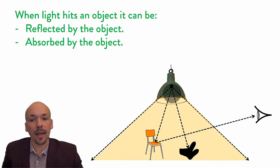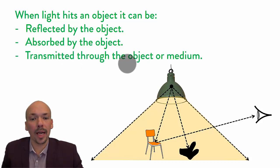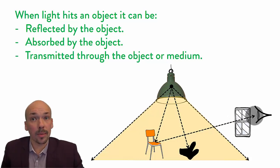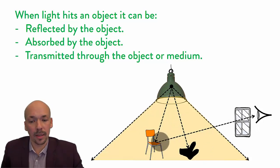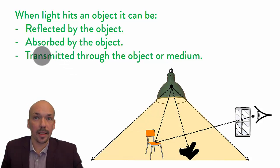The final thing that can happen is that light can be transmitted through an object or medium. It happens with air — light goes through the air, so it's transmitted. But also with glass: light hits the glass and goes through it, so you can see through the glass. So there are three things light can do: it can be reflected, absorbed, or transmitted through an object — sometimes a combination of these. These are the three main things that light can do when it hits an object.